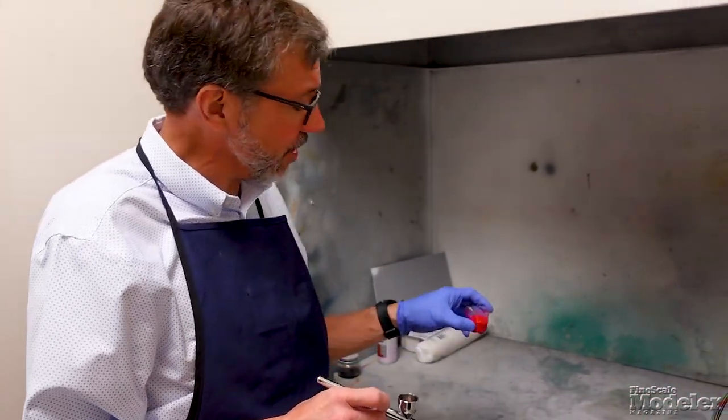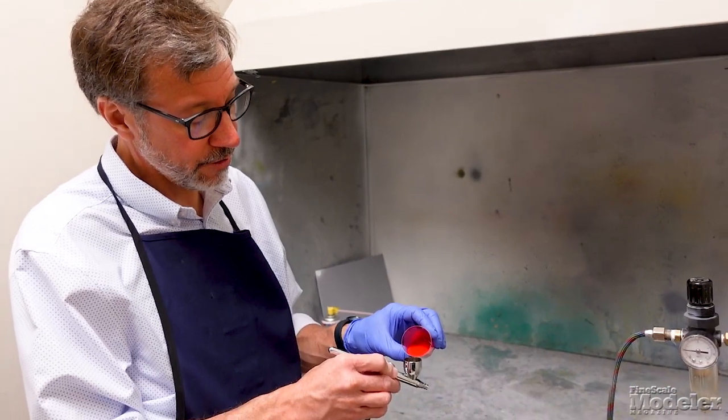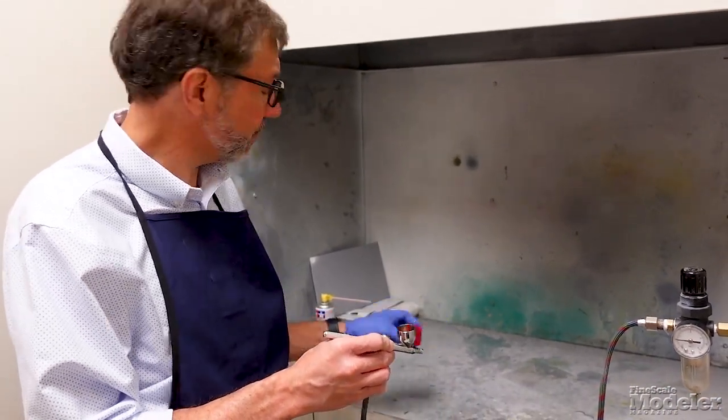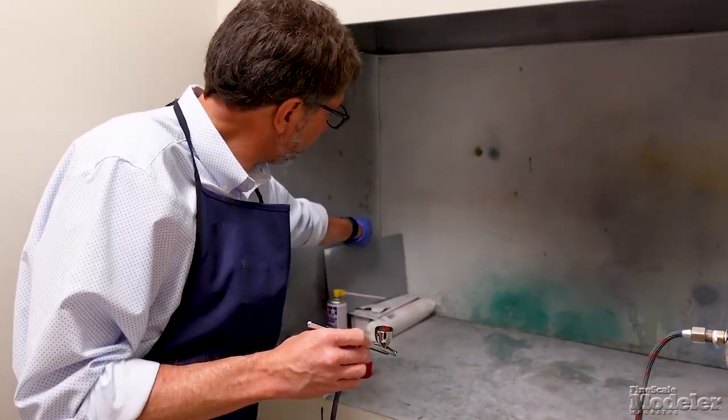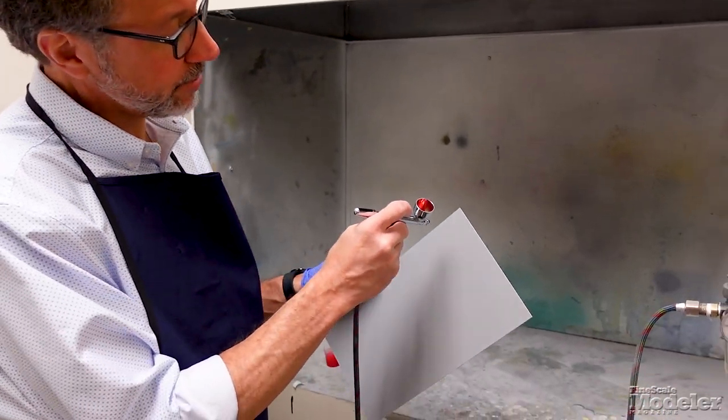Now I'm using Tamiya X7 Red, mixed about 50-50 with thinner. Some of this in my airbrush cup. And I've got some primed styrene here. So let's see what 8 psi looks like.